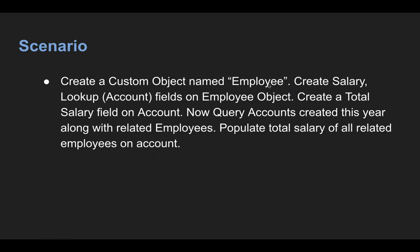So what we need to do: we need to create a custom object named Employee — it can be standard as well, but your lookup relationship should be custom. We need to create salary and lookup-to-account fields on the Employee object. Then we need to create a total salary field on Account. Then we need to query accounts created this year along with related employees, and we need to populate the total salary of all related employees on Account. This is the use case.